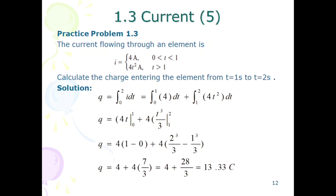The integral of t² is t³/3. We put in the upper limit minus the lower limit, and the final answer is 13.33 coulomb.